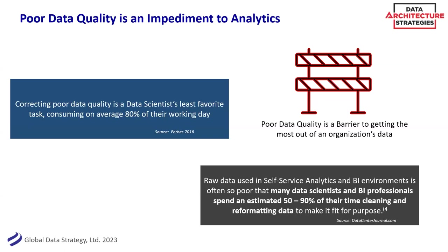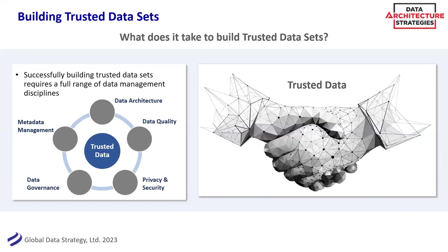What data scientists and analysts need are trusted data sets. Building trusted data sets involves a full range of data management disciplines. For example, data architecture helps to define the data standards required to enforce good data quality within an organisation. That impacts on privacy — you want your trusted data to be accessible only to the people that should have access to it. You want it well governed, and of course you want effective metadata in order to ensure that people can derive the correct meaning from that data. But the question is, how do you go about developing trusted data sets? I'll hand back to Donna now, who'll talk about the way that we do it in Global Data Strategy.